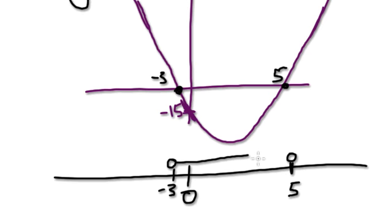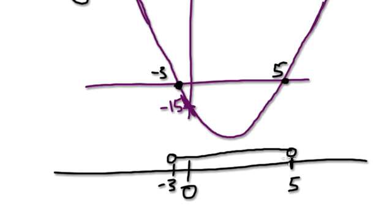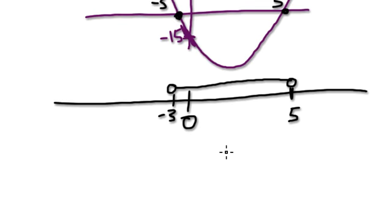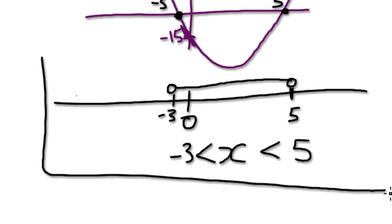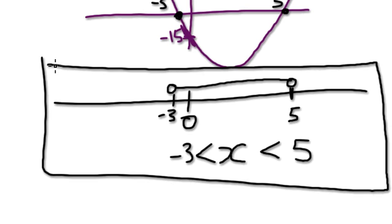And now to translate this into x. Hang on, x. Remember, x has to be strictly bigger than minus 3 and strictly less than 5. You see, this here is your solution. OK.